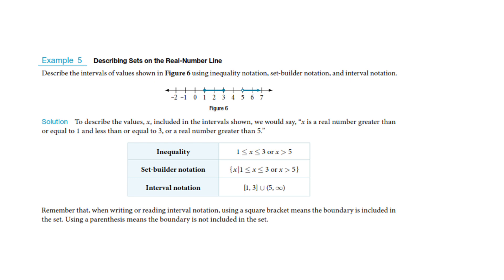I don't think this is very important, but this is just some more interval notation with dots. You see it's saying you want between 1 and 3, and you're unioning that with 5 to infinity, but you don't want the 5 — they have the open circle.